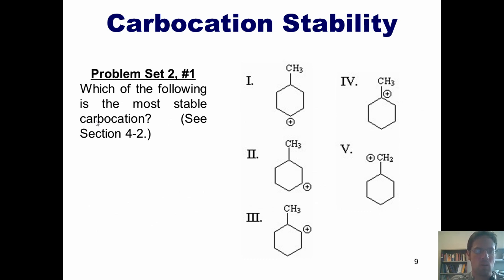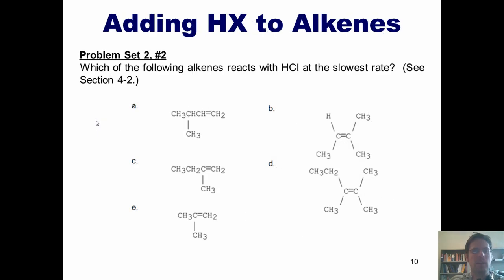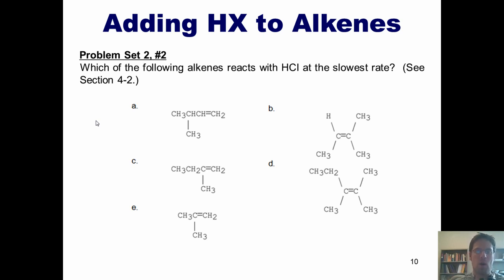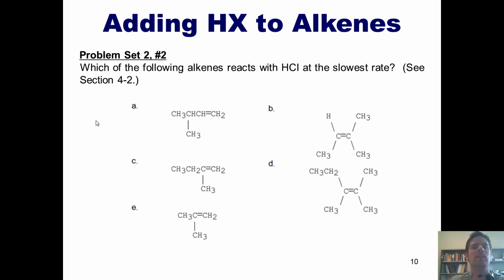This brings us to a problem set. Question: which of the following examples is the most stable carbocation? I believe I've given you enough information to determine the answer on your own. Here's another one: which of the following alkenes reacts with HCl at the slowest rate? To answer this, you need to draw out the mechanism for every single one of these five molecules reacting with HCl, look at each of the carbocation intermediates formed, and whichever one forms the least stable carbocation intermediate will react at the slowest rate.